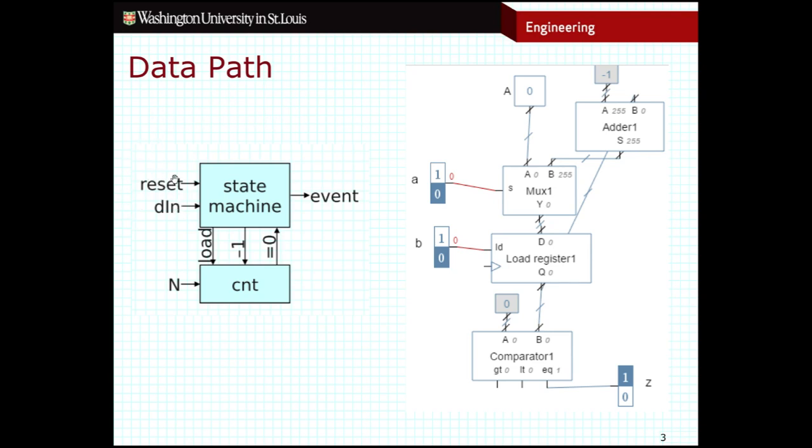We see these two inputs coming into the state machine as well as this output coming out of the state machine. But the state machine also needs to incorporate these outputs and this input from the data path. So the state machine now is responsible for managing inputs and outputs to the data path as well as the overall inputs and outputs from the high-level state machine itself.